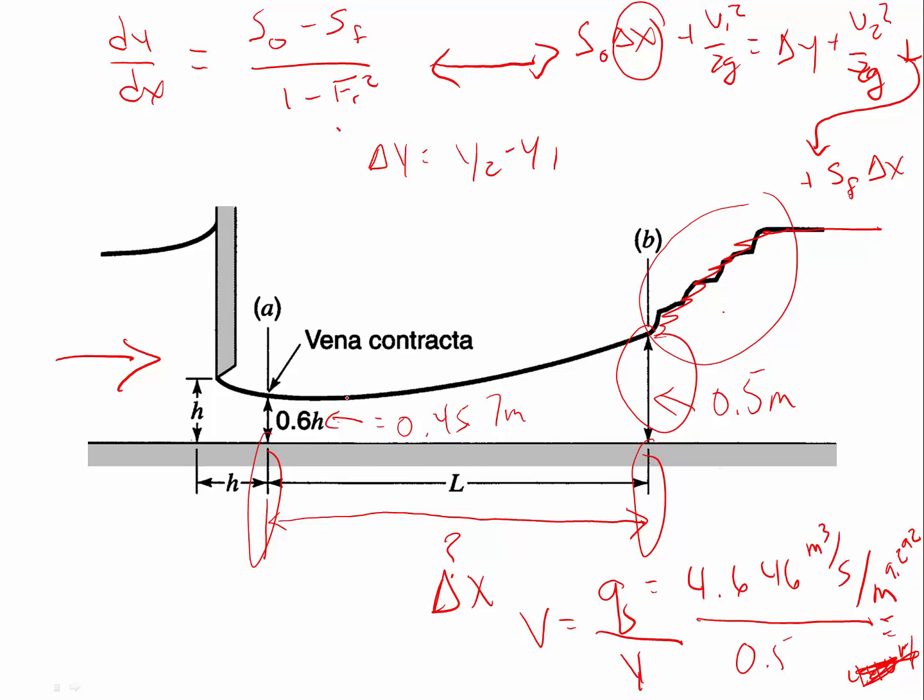And that is the distance between right here at the vena contracta to the distance downstream where it's 0.5 meters. So that's how you do it. That's basically, as I said, we're working on being able to compute water surface profiles. And this is your first effort at doing that, the first example problem. And this is a fairly simplified problem in using a form of the differential, the gradually varied flow equation.